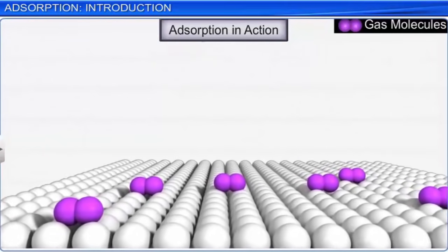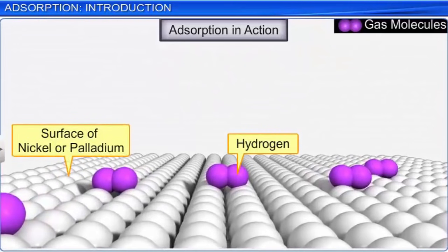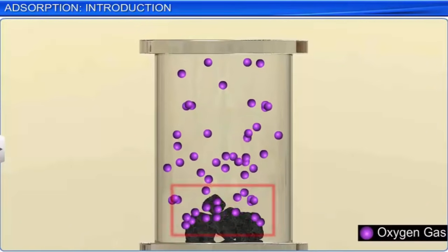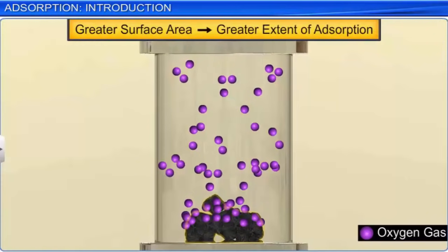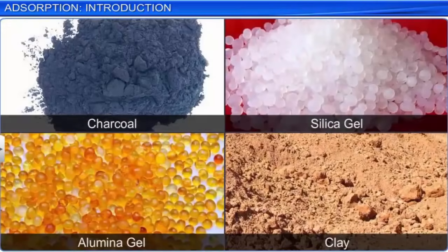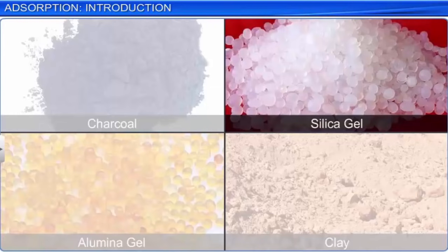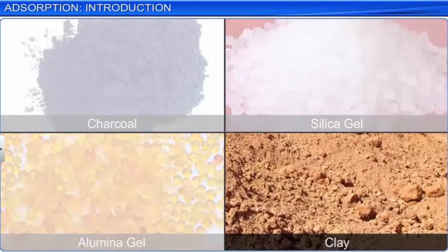The adsorption of a gas on the surface of a metal is called occlusion. For example, hydrogen is adsorbed on the surface of nickel or palladium. It is important to note that adsorption is a surface phenomenon; hence, greater the surface area of the adsorbent, greater is the extent of adsorption. Thus, finely divided metals and substances with porous structure are good adsorbents as they provide large surface area. Charcoal, silica gel, alumina gel, and clay act as excellent adsorbents.